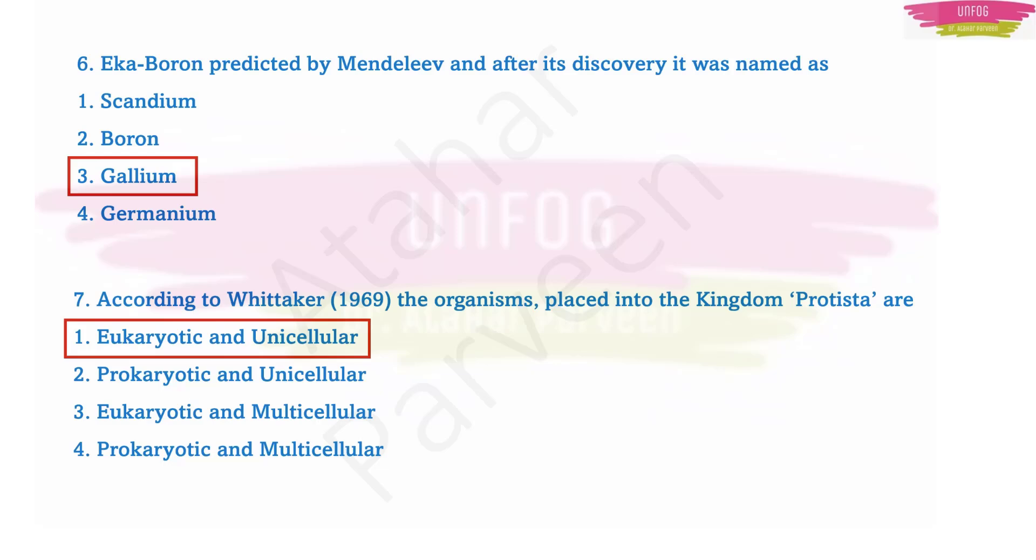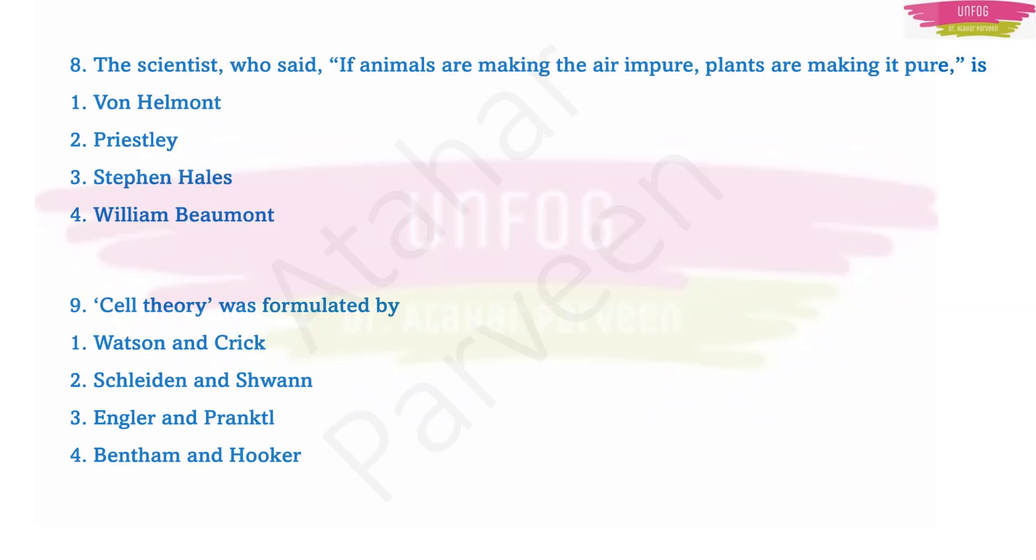I really hope that you all are watching this class attentively because all the multiple choice questions which I am discussing here are most expected questions. Question number eight: the scientist who said 'if animals are making the air impure, plants are making it pure,' is... Who is the scientist who gave this statement? He is Stephen Hales. Stephen Hales is familiarly known for this statement that if animals are making the air impure, plants are making it pure.